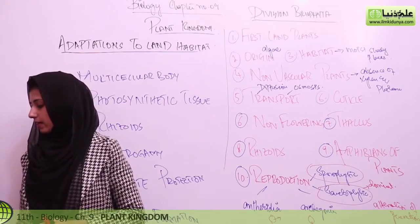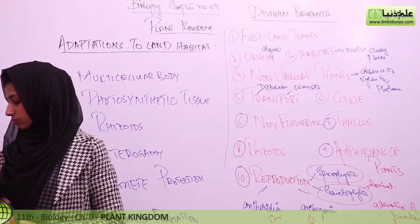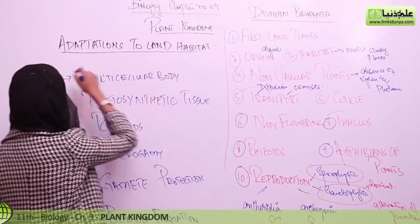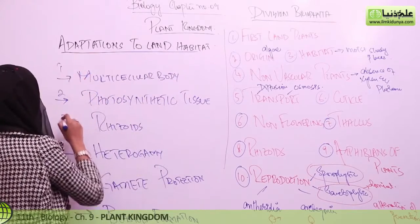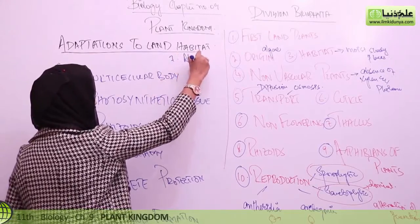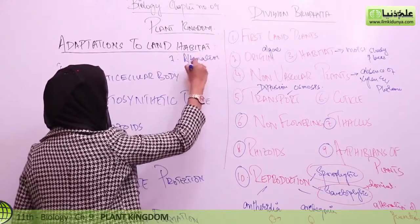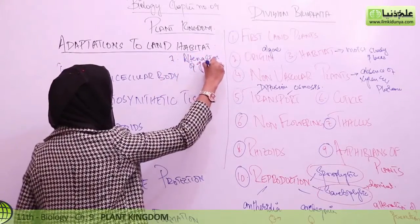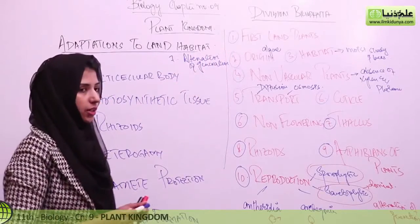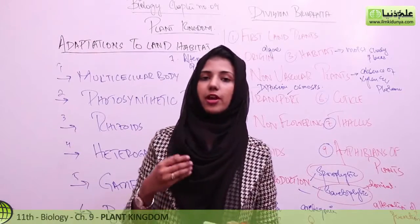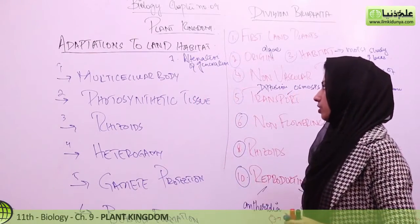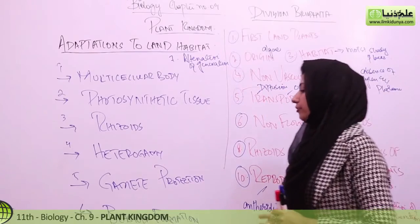Next is the alternation of generation. Generations alternate — gametophytic generation gives rise to sporophytic generation, and sporophytic generation gives rise to gametophytic generation. So that's all about the bryophytes.